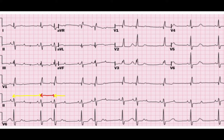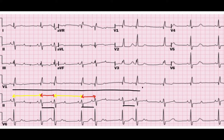The QRS complexes are irregular — not irregularly irregular, but regularly irregular. There is a sense of group beating here. And what about this part here? So you can see there is more to return to in this ECG.